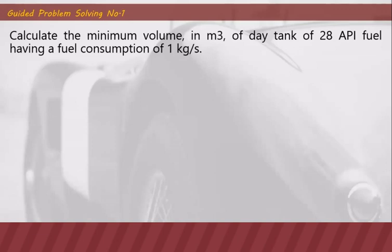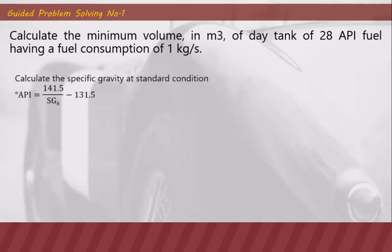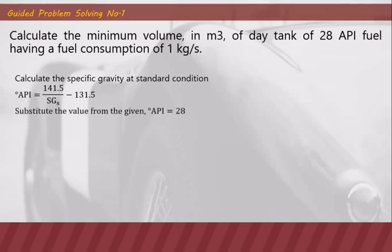To calculate the minimum volume, we first determine the specific gravity at standard condition. The formula is: degrees API equals 141.5 divided by the specific gravity at 15.56°C (standard) minus 131.5. Substituting the given value of 28 degrees API into that formula, we solve for the specific gravity at standard condition, SGS, which equals 0.8871.